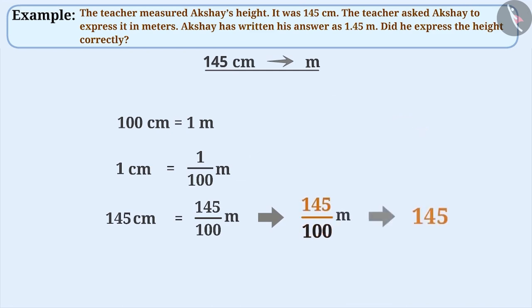If the denominator is 100, then we will leave the first two places from the right and place the decimal point. Thus, 145 centimeters is equal to 1.45 meters.